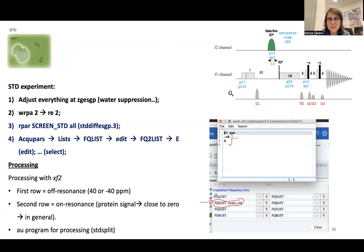This is a list. Usually it's a reference where, for example, minus 40, I have nothing there, or could be plus 40 could be plus 20. It cannot be too close to zero because you can eventually affect groups because you have protein peaks there. So you don't want to affect neither the protein nor the ligand. And zero is my saturation. So here I have a protein that has peaks at zero ppm.